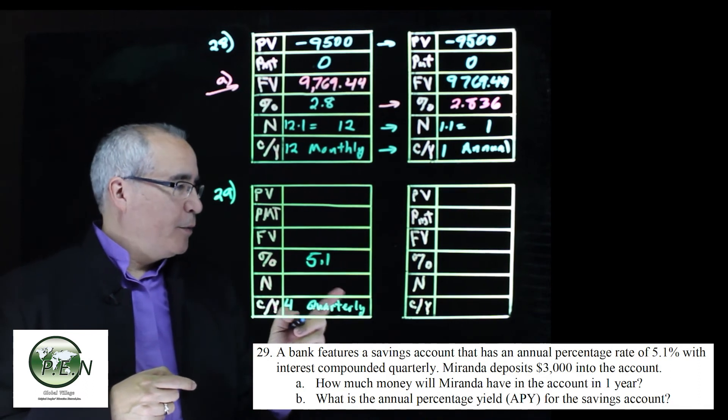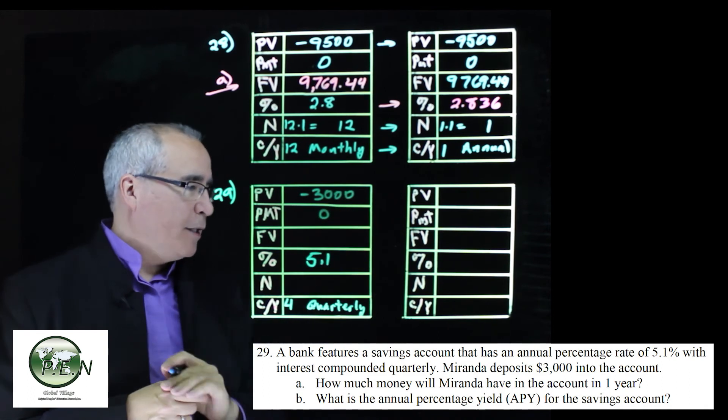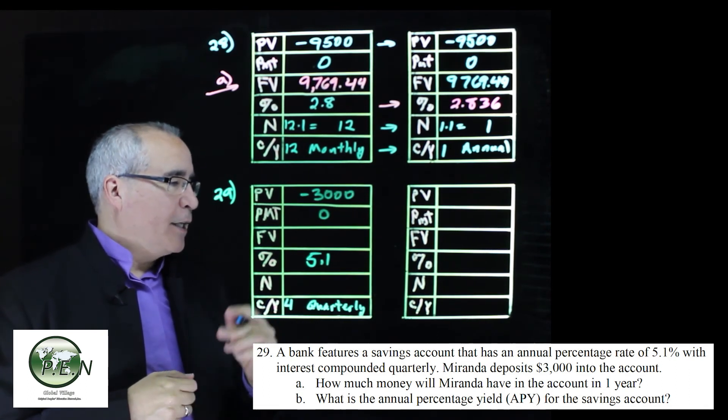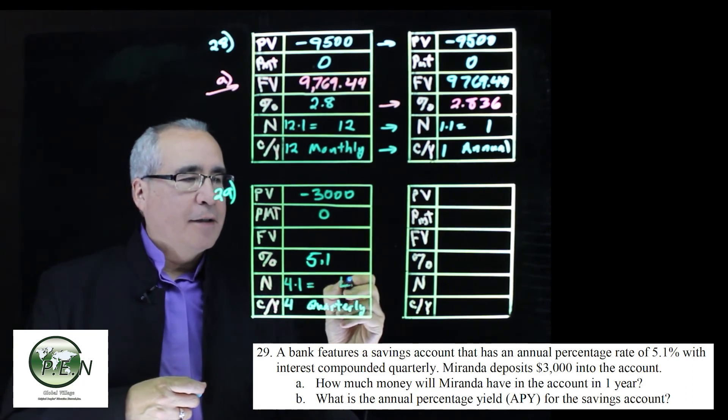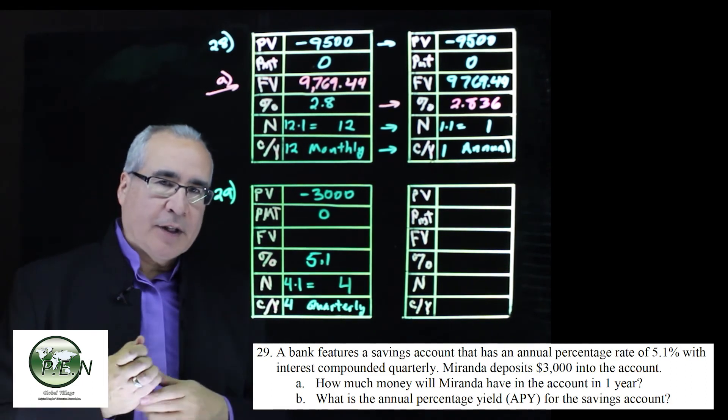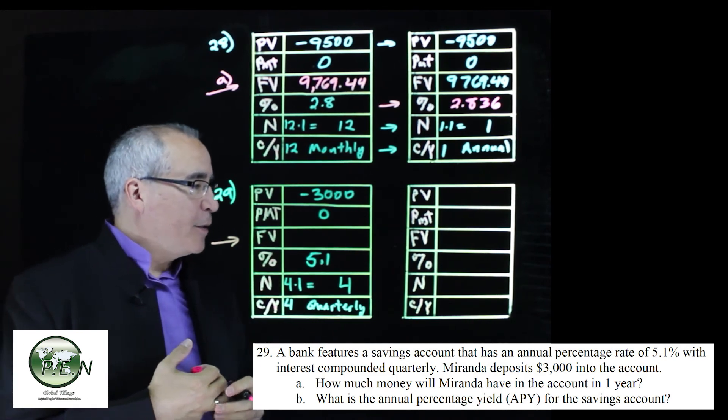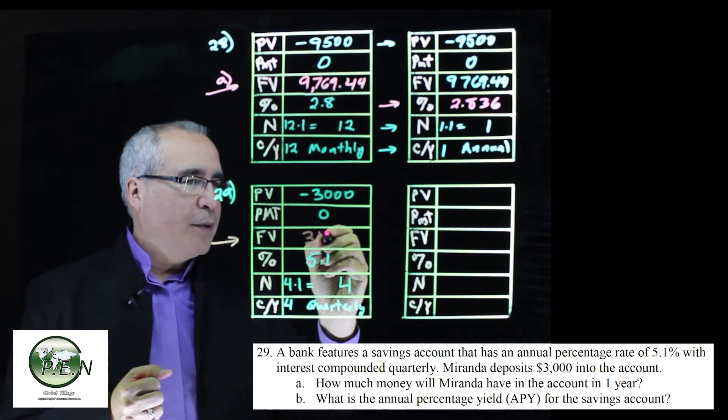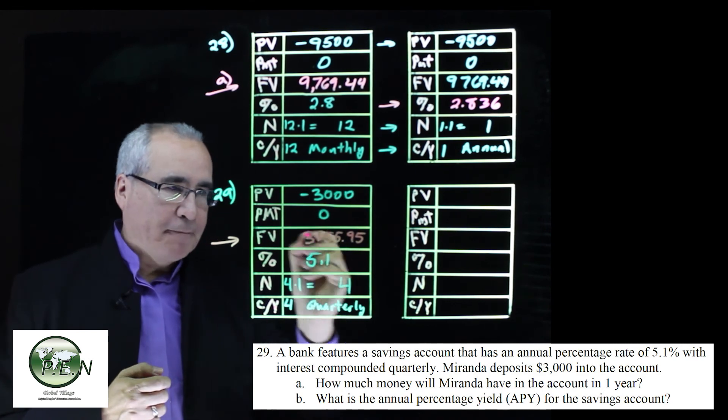She's going to put, Miranda's putting in 3,000, so that goes up here, a one-time deposit, no payments. How much money will Miranda have in the account in one year? So four times one, we're putting in four here. And again, for the A part, we just answer this by pushing on the FV or clicking on it, the future value button, and we get $3,155.95. Done, A.